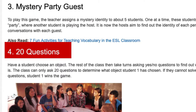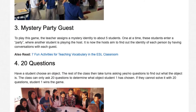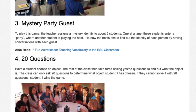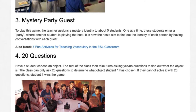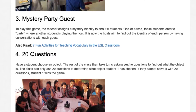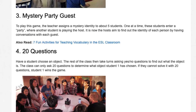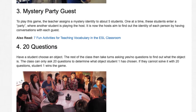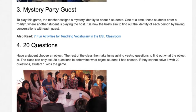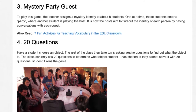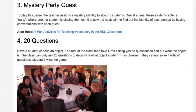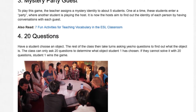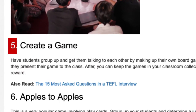Activity 4: 20 Questions. Have a student choose an object. The rest of the class then take turns asking yes-no questions to find out what the object is. The class can only ask 20 questions to determine what object the student has chosen. If they cannot solve it within 20 questions, that student wins the game.